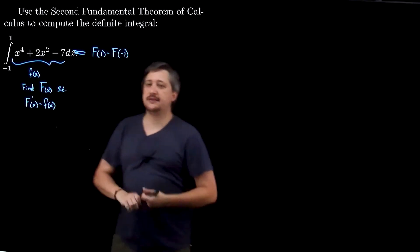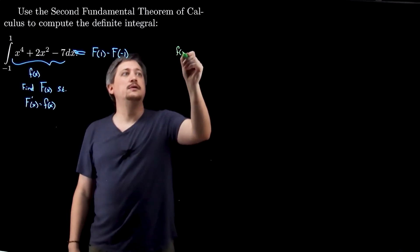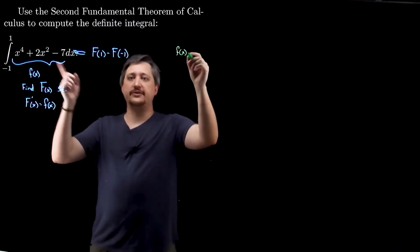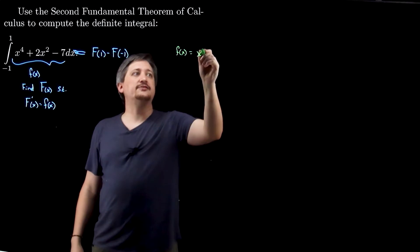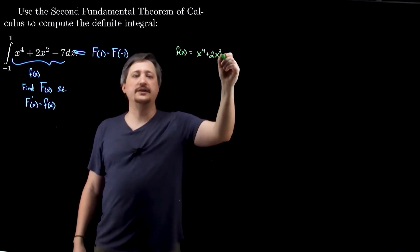So, let's go ahead and do that then. So, our little f of x then is the integrand, the thing inside. So, that's x to the fourth plus 2x squared minus 7.